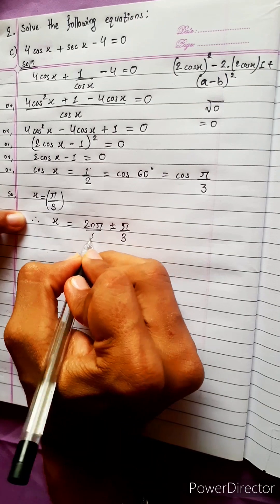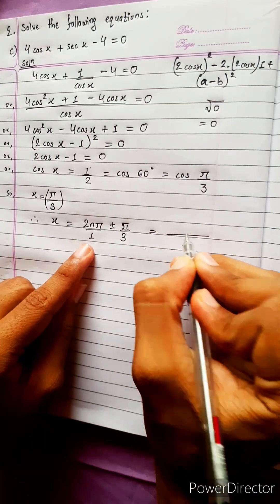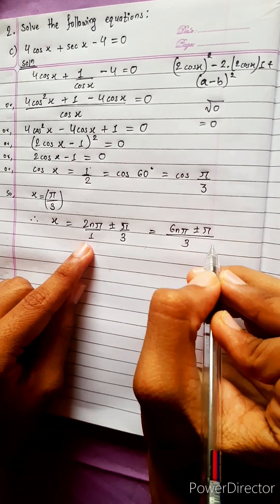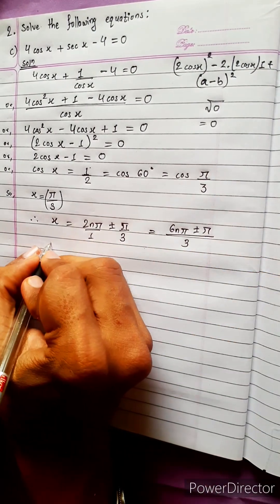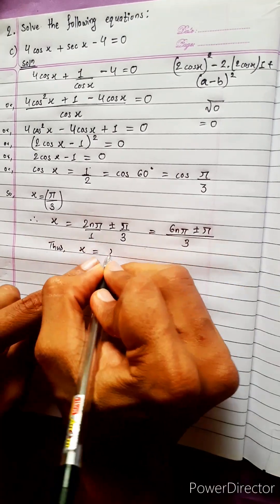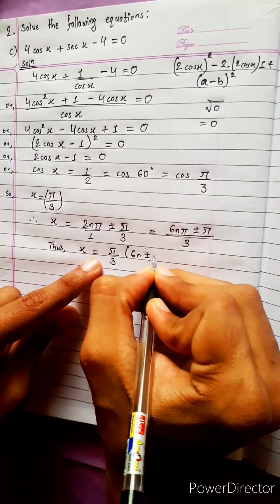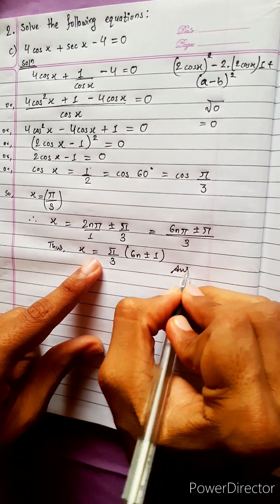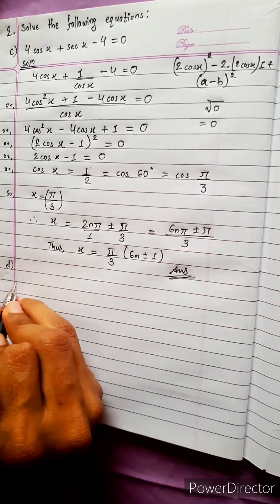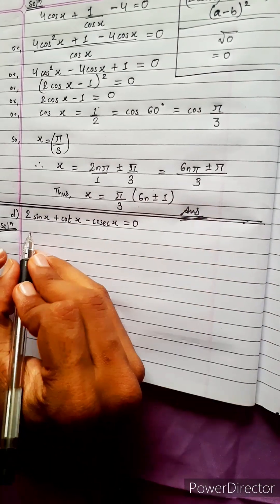Taking LCM 3, we get x = (6nπ ± π)/3. Taking π/3 common, the answer is x = π/3(6n ± 1).